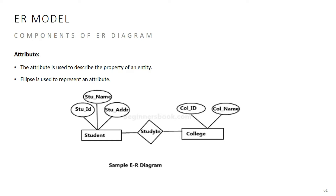In this figure, a student is studying in college. The student entity has attributes such as student ID, student name, and student address. For example, how do you describe yourself? Using your identity card — your name, address, email address, and mobile phone number. These are all attributes describing the student entity.